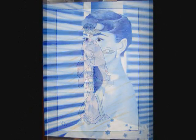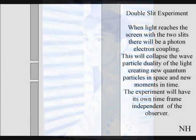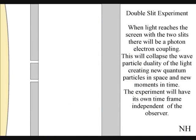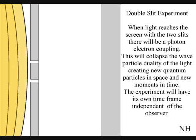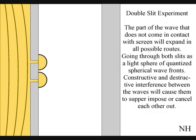The best way to see this happen directly with light is in the two-slit experiment. When the light reaches the screen with the two slits, the photons will react to the electrons of the screen. This will collapse the wave particle reality of the light, creating new quantum particles in space and new moments in time. The part of the wave that does not come in contact with the screen will expand in all possible routes, going through both slits.